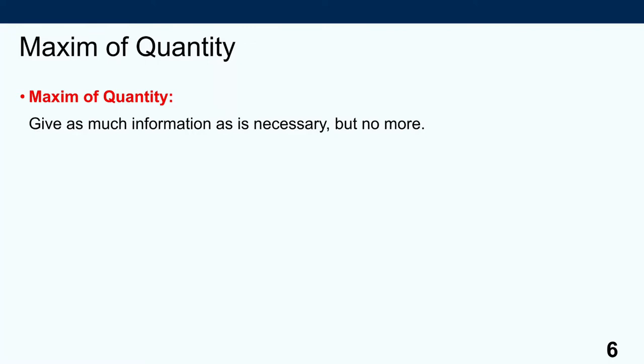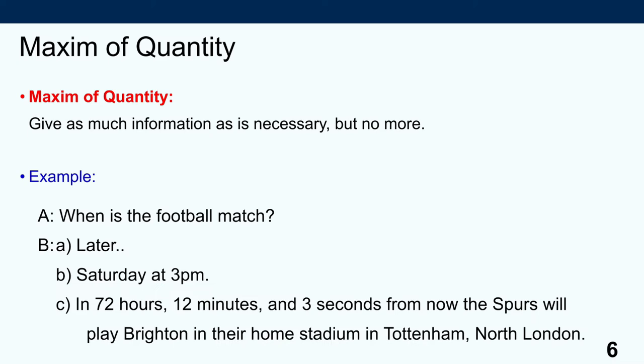The first of these maxims is the maxim of quantity. The maxim of quantity says: give as much information as is necessary, but not more. For example, if person A asks, 'When is the football match?' person B has a number of possible responses. Response A, 'Later,' is clearly not enough information — person A wanted to know when the match starts and B refuses to supply that. Response B, 'Saturday at 3 p.m.,' is pretty much perfect — not too little, not too much.